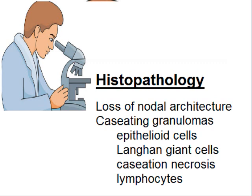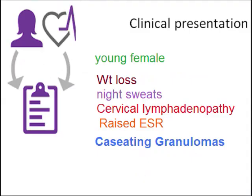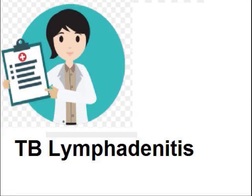To summarize the histopathological findings: loss of nodal architecture, caseating granulomas, epithelioid cells, Langhans giant cells, caseation necrosis, and collar lymphocytes. Keeping in view the clinical presentation — young female, weight loss, night sweats, cervical lymphadenopathy, raised ESR — and the caseating granulomas on histopathology, the provisional diagnosis is tuberculous lymphadenitis. Whenever we make a diagnosis, we consider clinical presentation, gross features, and histopathological examination together. The next topic will be lymphadenopathy due to lymphoma.